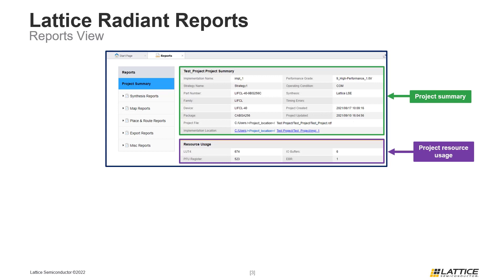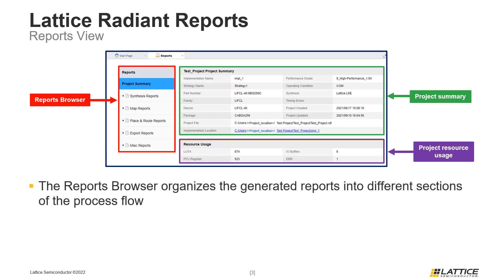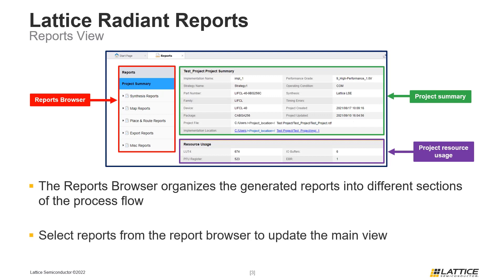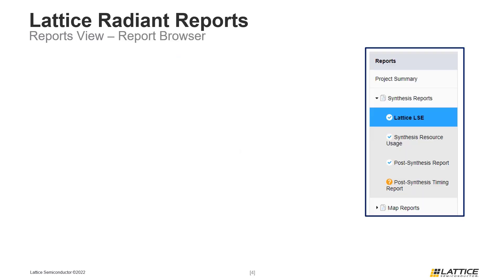The other portion of the Reports View window is the Reports Browser. The Reports Browser organizes generated reports into several different sections depending on the stage of the process flow. Selecting a report from the Reports Browser will open it in the main section of the window, replacing the Project Summary and Resource Usage sections. The reports in this area are organized into different sections depending on the stage of the process flow the report was generated during.